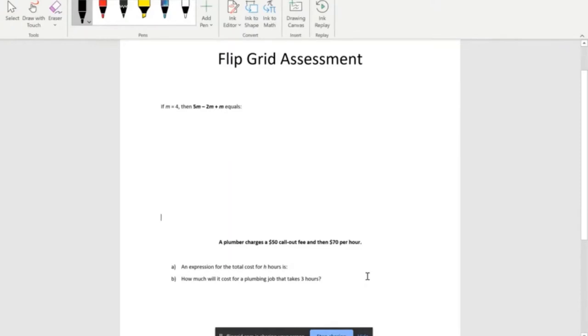Today we are going to work on two questions, so let's get started. Our first question is: if m equals 4, then 5m minus 2m plus m equals...